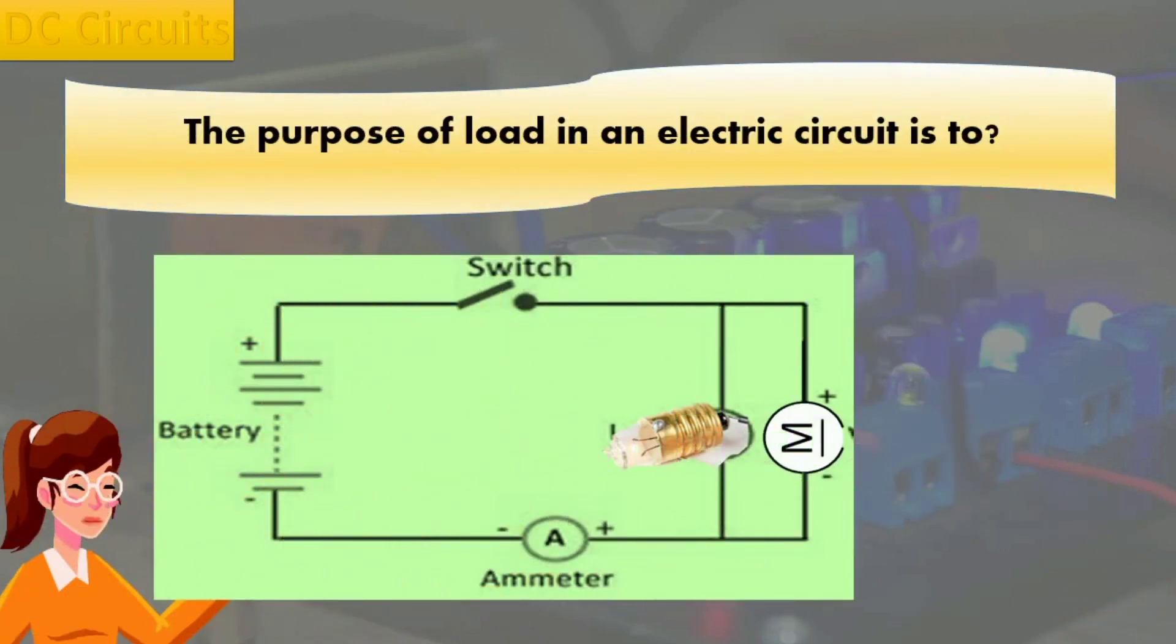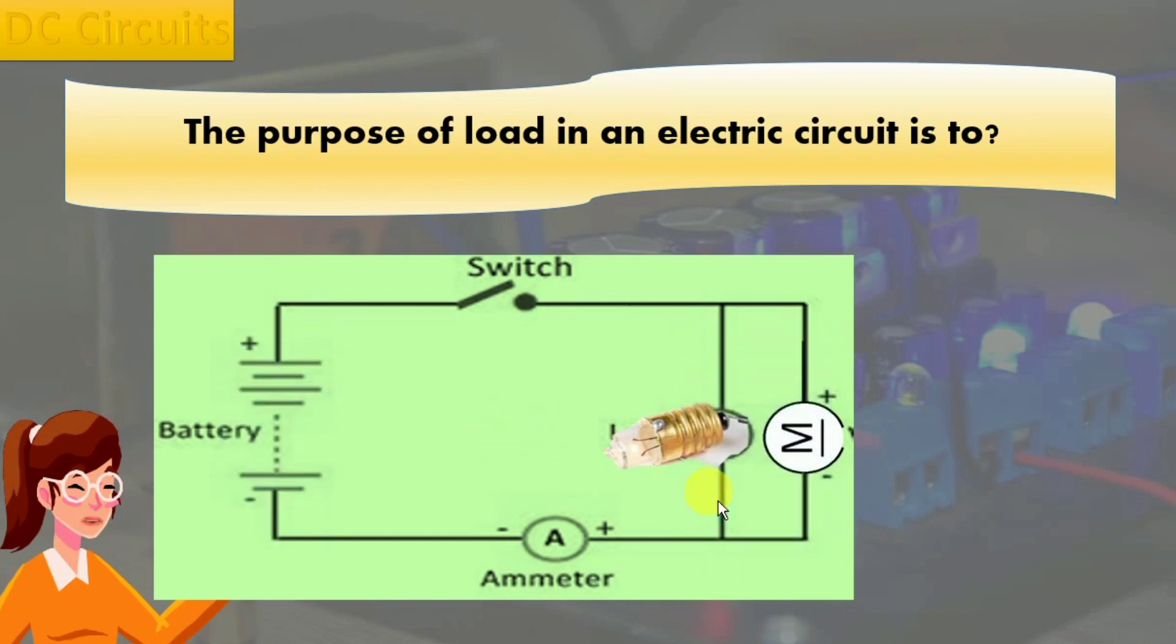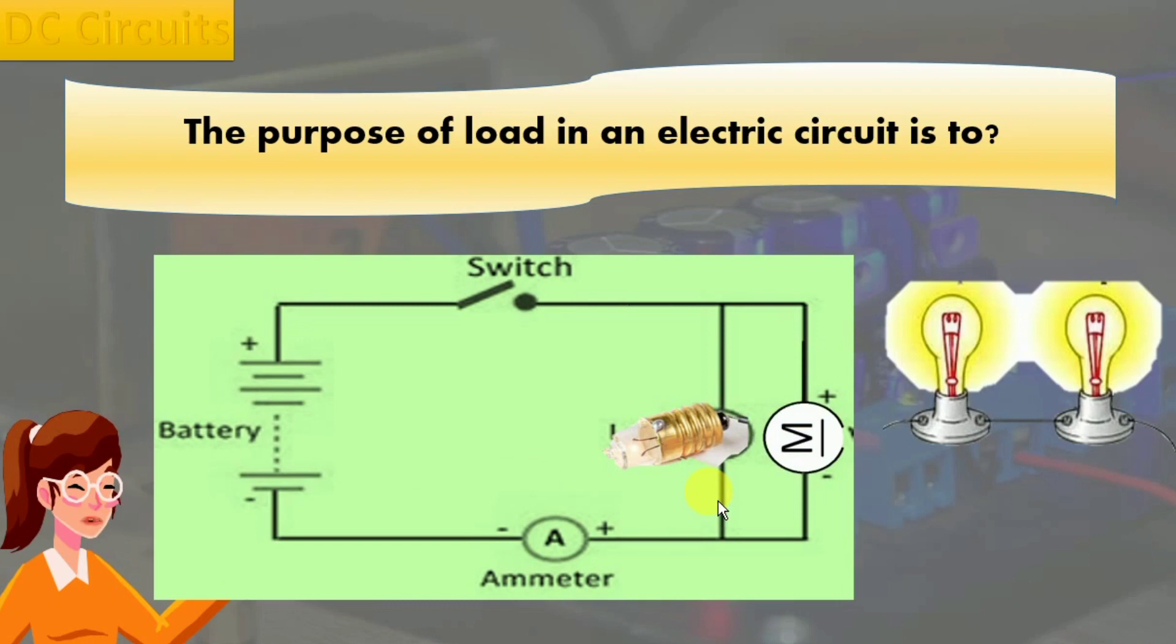An electrical circuit is a collection of components that completes a circuit. Any component that is missing will prevent the circuit from working. One or more loads and a current source such as a battery make up a basic DC circuit.